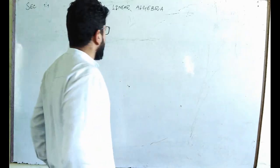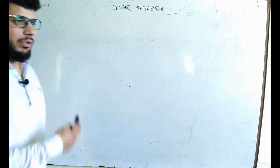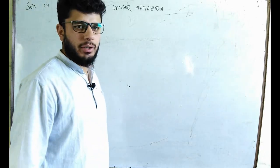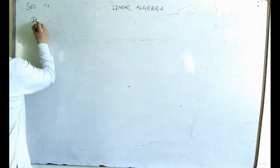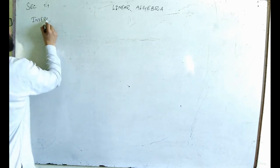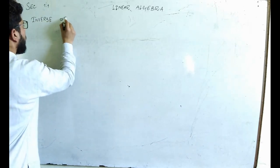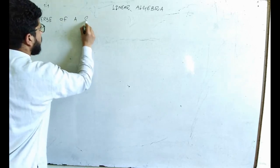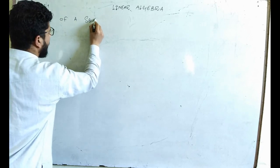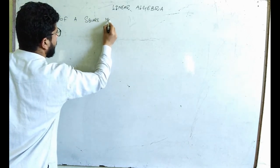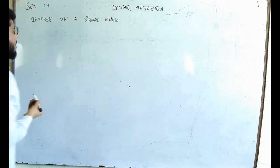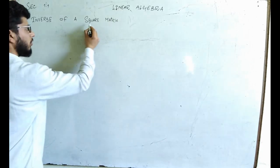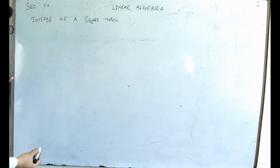Continuing Linear Algebra section 1.1, we will discuss today the inverse of a matrix. Let's start — we will discuss the inverse of a square matrix. Why only square? Let me write the definition of what the inverse of a matrix is.